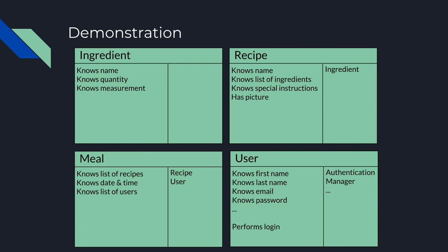An example of this class could be a quarter cup of sugar. A recipe, on the other hand, must have a name, a list of ingredients, any special instructions, and might include a picture of the food item. On the right side of the card we list ingredient, because multiple ingredients are stored within a recipe and the recipe class collaborates with the ingredients class. An example of this class could be cookies, which has a list of ingredients, instructions such as mix all ingredients together in a bowl, preheat the oven to 350, and bake for 15 minutes.